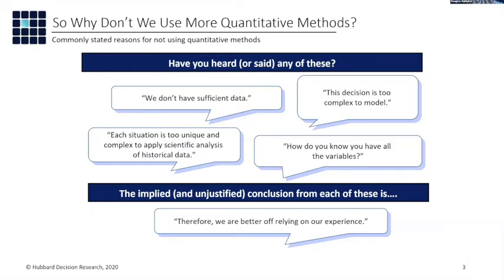Whatever modeling method you're using, it's going to be wrong. All models are wrong — a famous statistician, George Box, said that. All models are wrong, but some are useful. I just point out that some are measurably more useful than others, and you can't help but model. If a model had no error, we wouldn't even call it a model, we'd call it reality. Models have errors because they're necessary abstractions. So when someone says something is too complex to model, are they arguing they should use intuition instead? Are they claiming intuition is better at handling complex situations? The evidence says no.